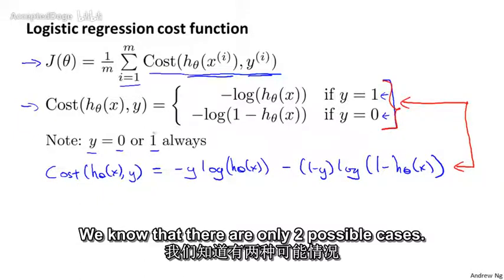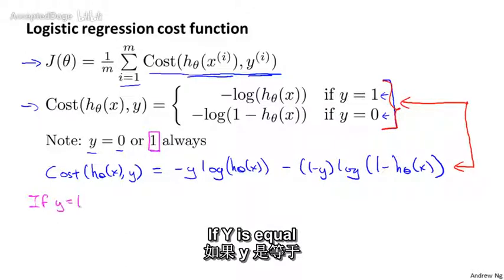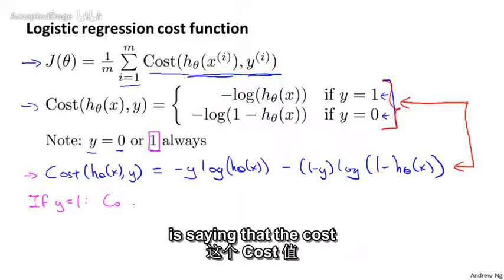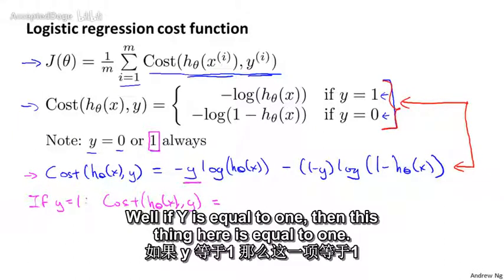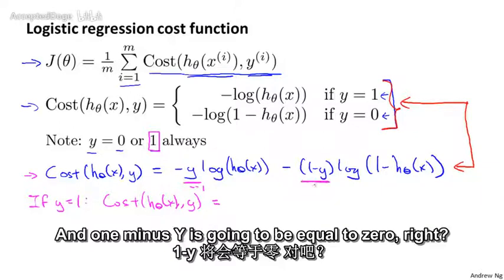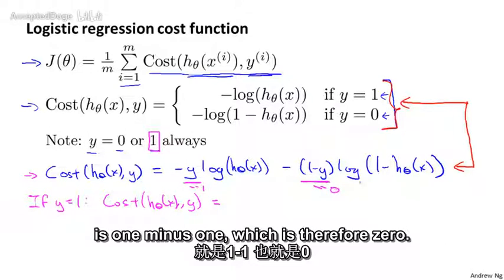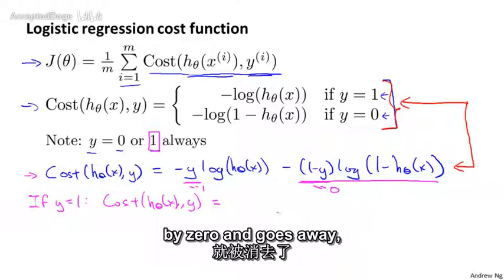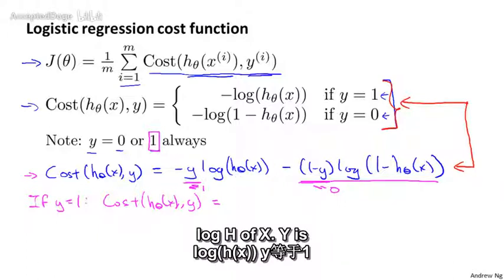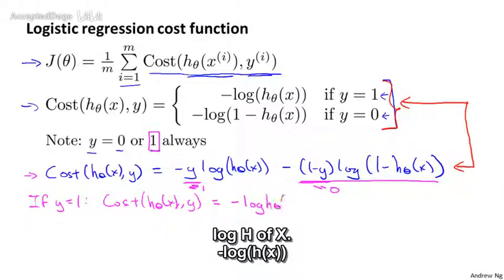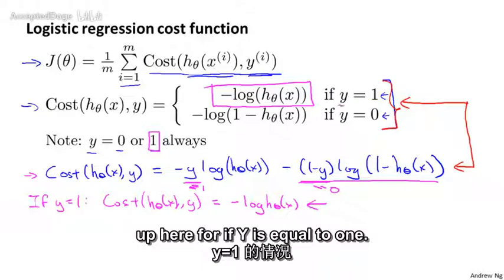We know that there are only two possible cases. y must be 0 or 1. So let's suppose y equals 1. If y is equal to 1, then this thing here is equal to 1, and 1 minus y is going to be equal to 0. So if y is equal to 1, then 1 minus y is 1 minus 1, which is therefore 0. So the second term gets multiplied by 0 and goes away, and we're left with only this first term, which is minus y times log h(x). Y is 1, so that's equal to minus log h(x). And this equation is exactly what we have up here for if y is equal to 1.